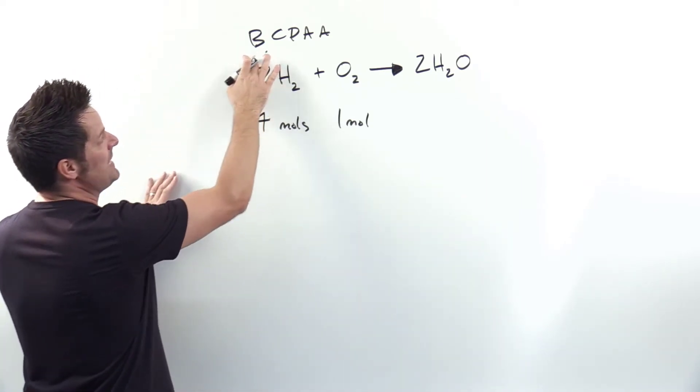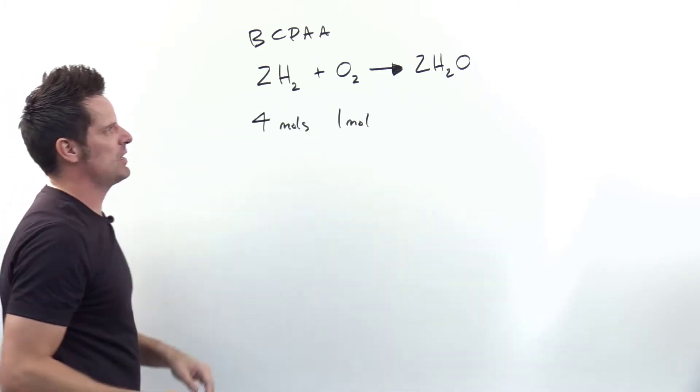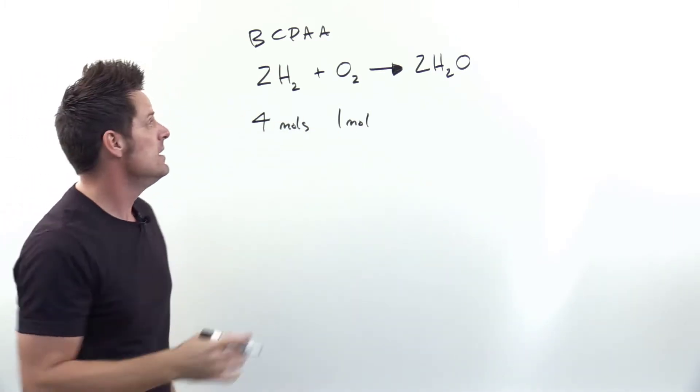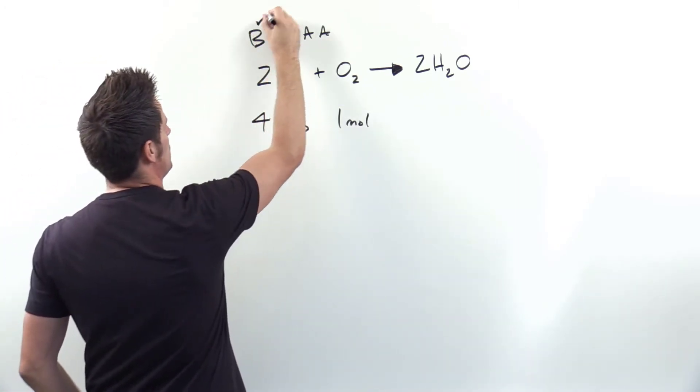So step B of BICPA is balance the chemical equation, according to principles we discussed in an earlier video linked to in the description below. Conveniently, this equation comes to us balanced, so we're done with step B.